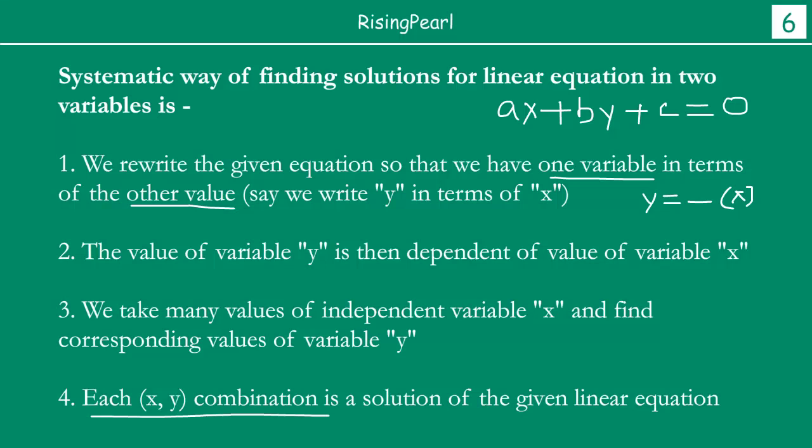And then each of the x-y combination is your solution for the given linear equation. This is actually how, if you think about it - in our example one and example two that we saw, that is actually how we did it. We assumed let x equal to something and then for each of those x we found out the value for y. So this is just a systematic way of actually solving linear equations in two variables. Now we will just apply this knowledge in one last example before we wrap up today's presentation.